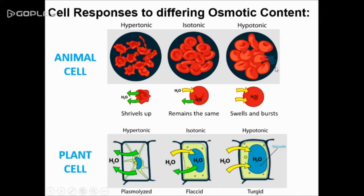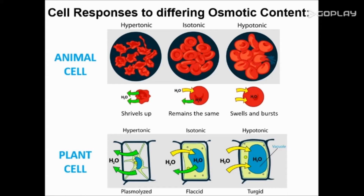Finally, in a hypotonic solution, when an animal cell is placed in a solution where there is less solute and more water, water is going to enter into the cell, eventually resulting in the animal cell swelling up and bursting. While in the case of the plant cell, water again is going to enter the cell, but because of the presence of the cell wall, the cell wall is going to keep the plant cell intact and the plant cell is going to be turgid.